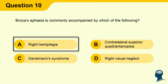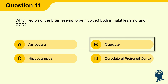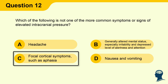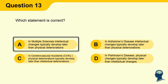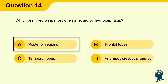Question 10: Broca's aphasia is commonly accompanied by right hemiplegia. Question 11: Brain region involved in habit learning and OCD — answer B, Caudate. Question 13: Which statement is correct — answer A, In multiple sclerosis intellectual changes typically develop later than physical deteriorations. Question 14: Brain region most often affected by hydrocephalus — answer A, Posterior regions.